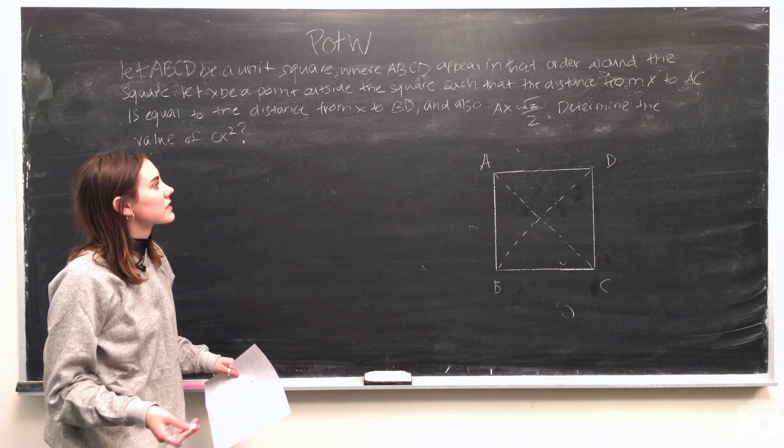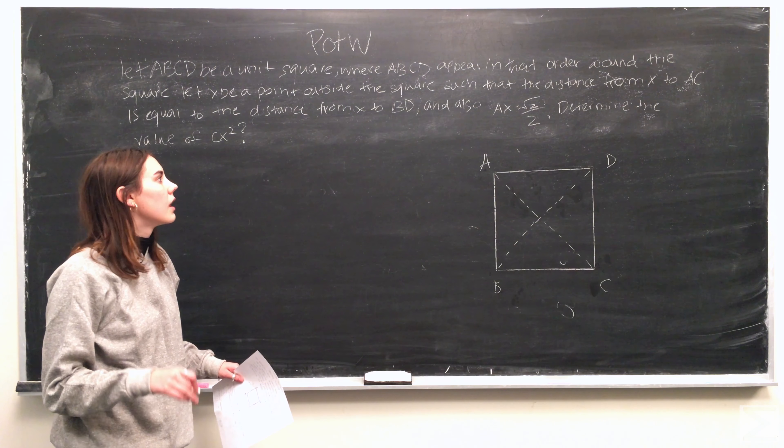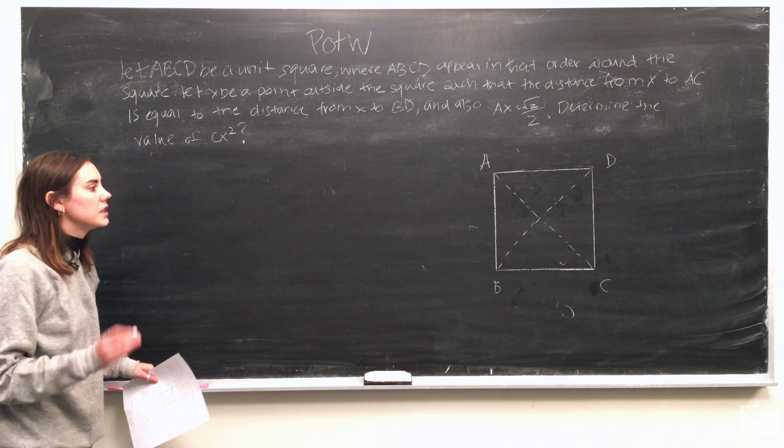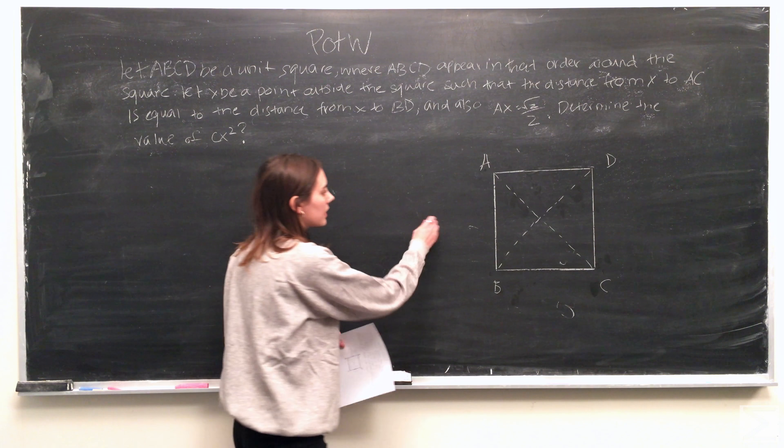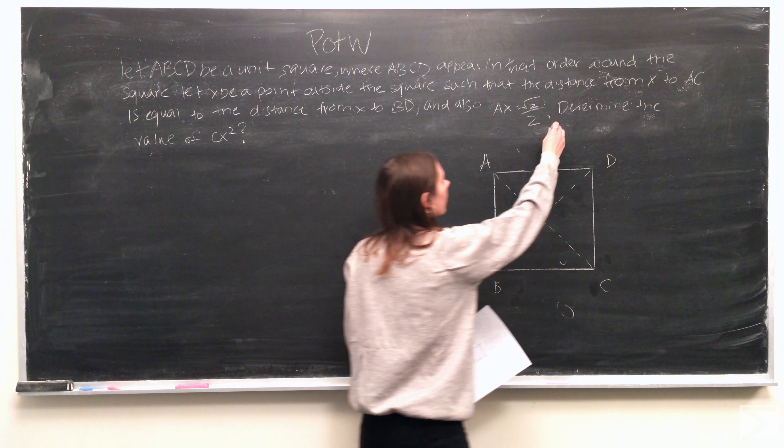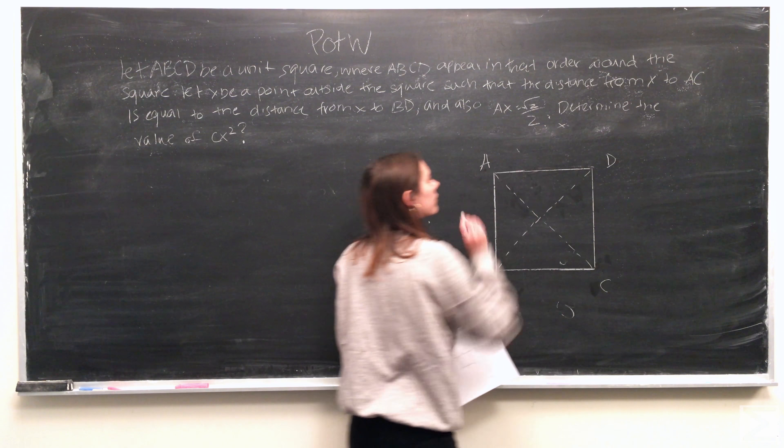And since we know that x has to be equidistant from ac and bd, what that means is x either has to be some point over here or some point above the square.